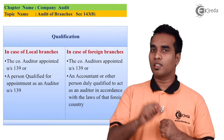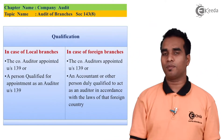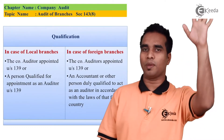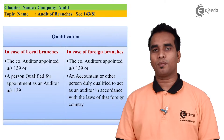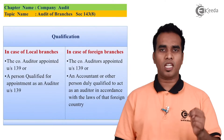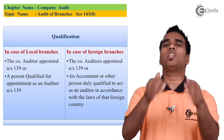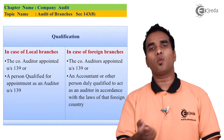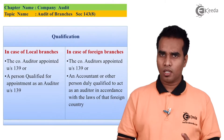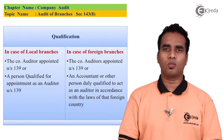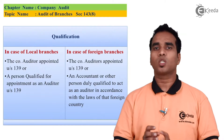But if the branches are outside India — say Reliance has a branch in the USA — then the branch audit is done by the company's main auditor for that country, or by a professional qualified under the respective law of that country, such as a CPA.